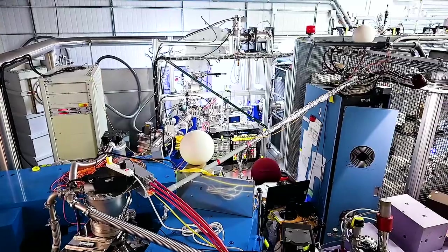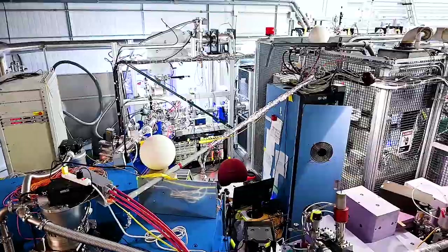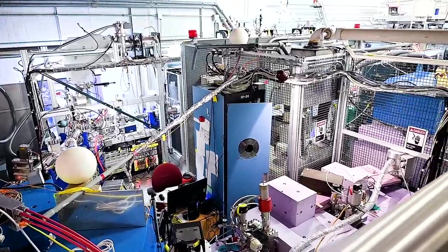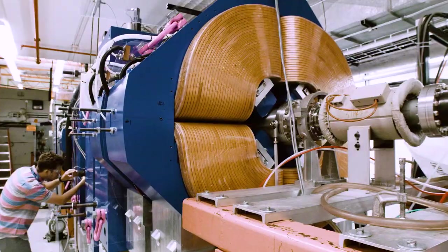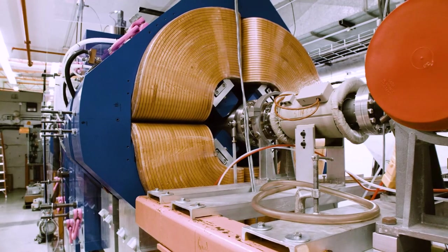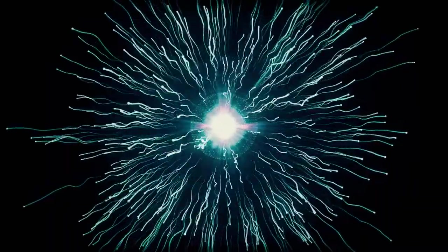At ATLAS, scientists create and accelerate beams of charged atoms called ions, ranging across the elements from hydrogen to uranium. These beams of ions travel toward the end of the accelerator, getting faster and faster until they smash into target atoms. The aftermath of these collisions contains clues about the universe for scientists to uncover.